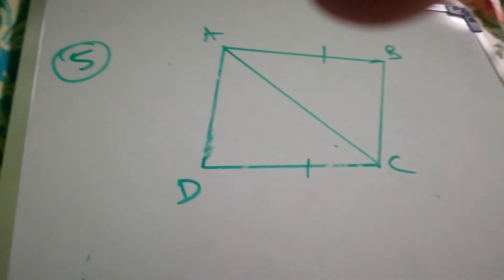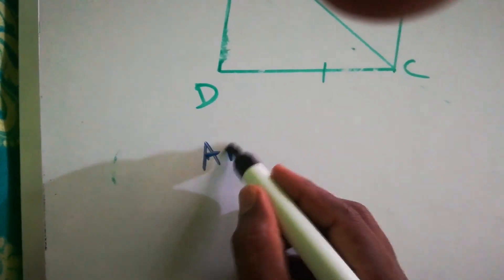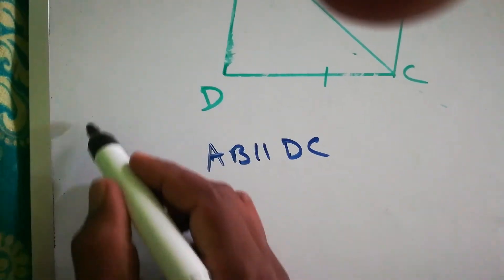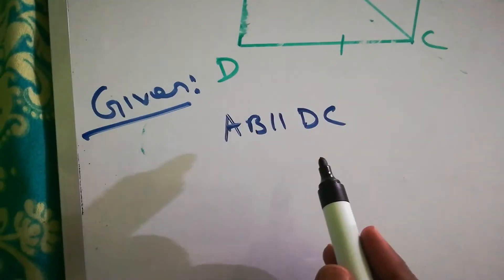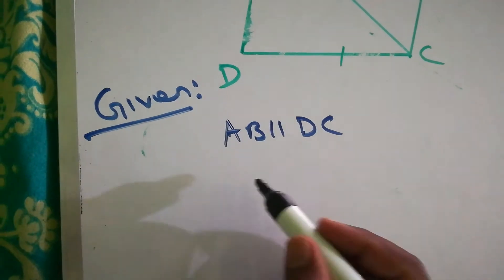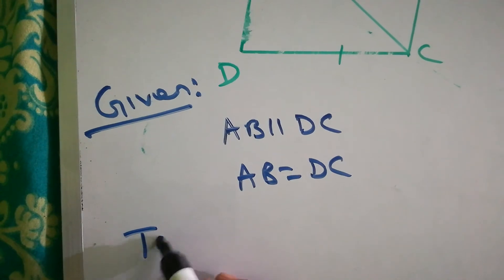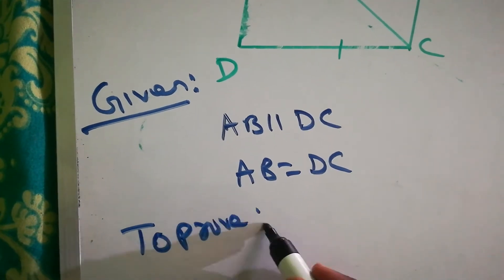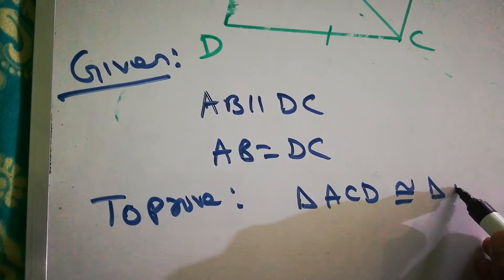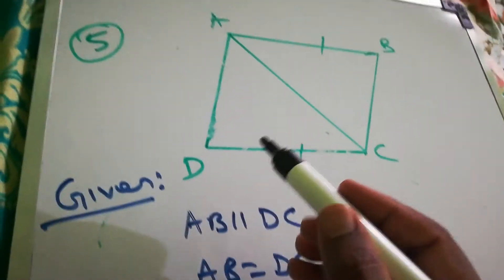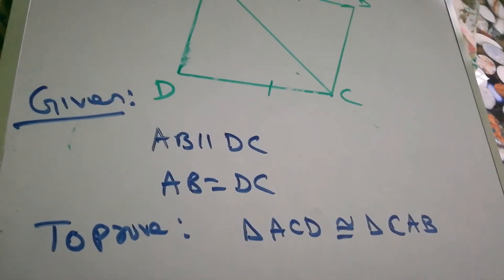Question 5: AB is parallel to DC and AB equals DC are given. We have to prove triangle ACD is congruent to triangle CAB.